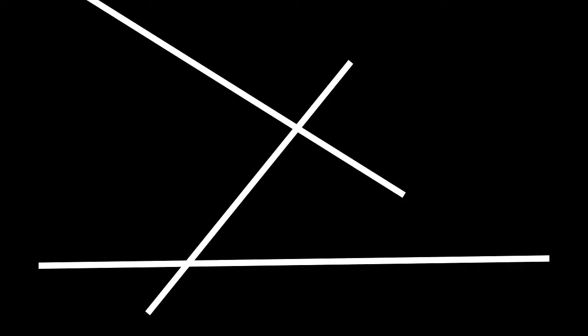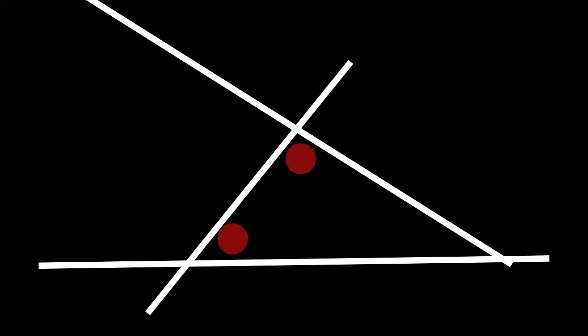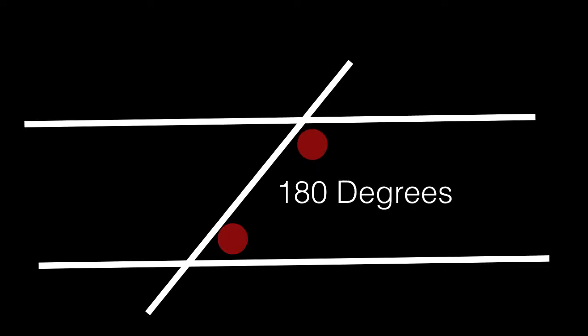This is the fifth axiom: if a straight line falling on two straight lines makes the interior angles on the same side less than two right angles, the two straight lines, produced indefinitely, meet on the side on which the angles are less than two right angles. You might have noticed there was a bit of a step up in obviousness. This is equivalent to saying that if the interior angles — the two red circles — add up to 180 degrees, then the two lines are parallel. You might remember this as co-interior angles from high school.